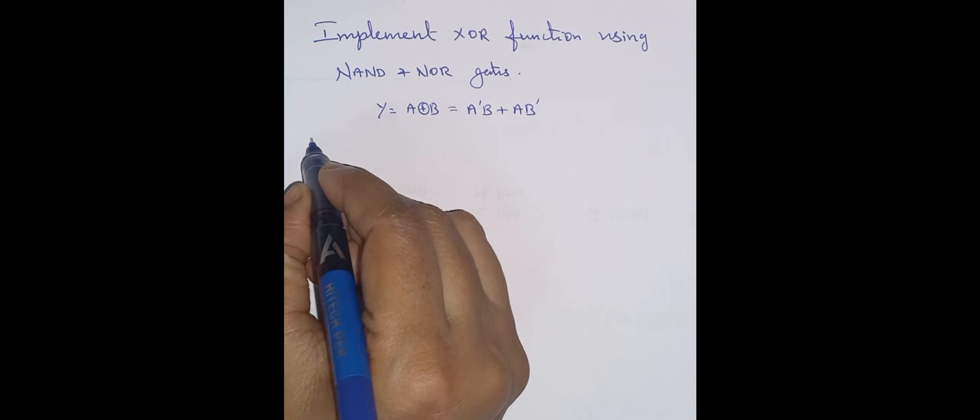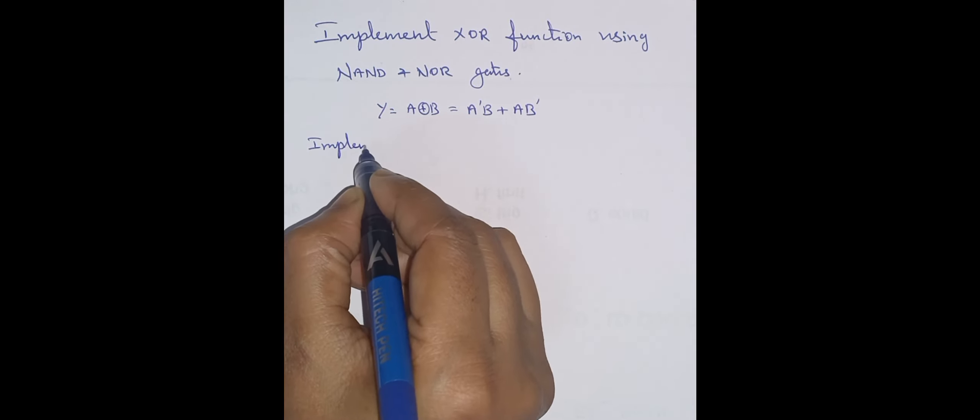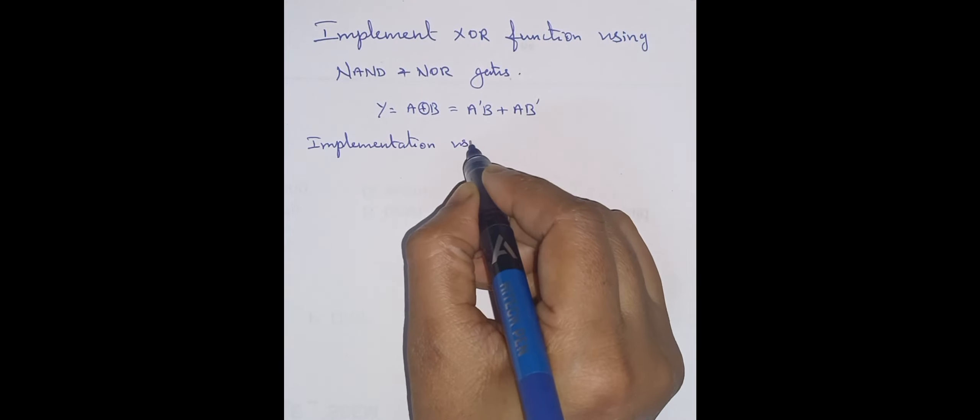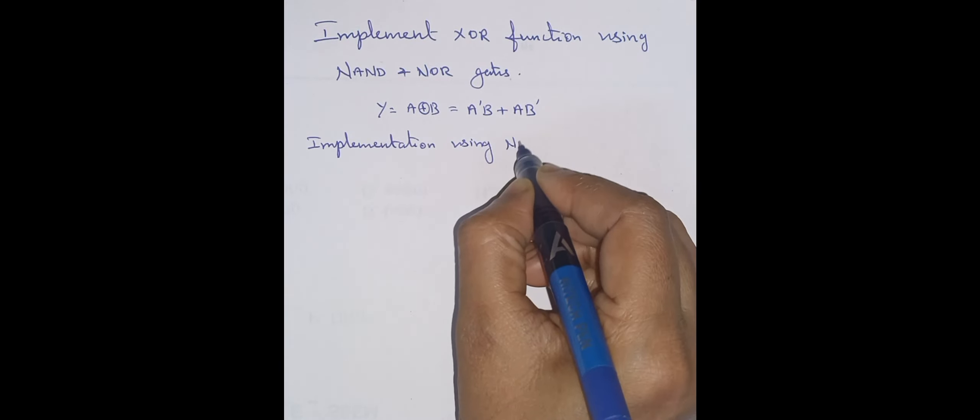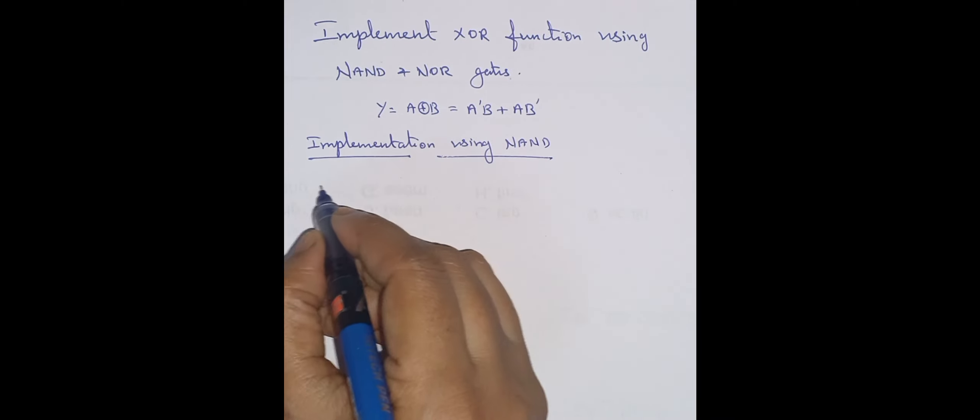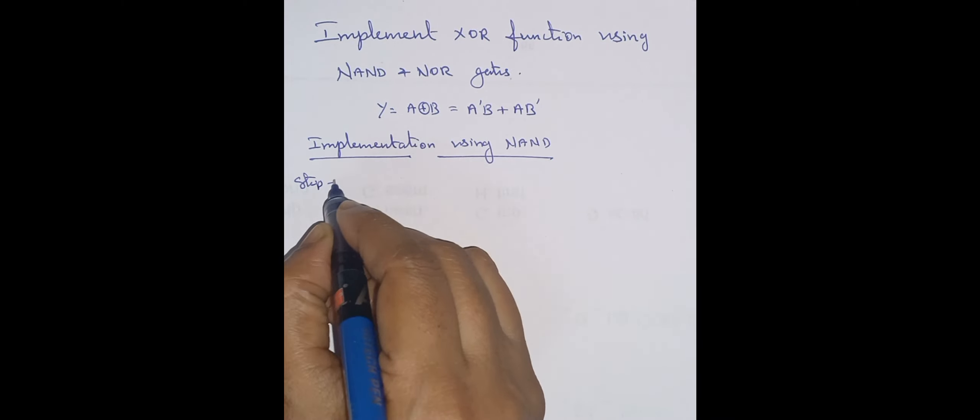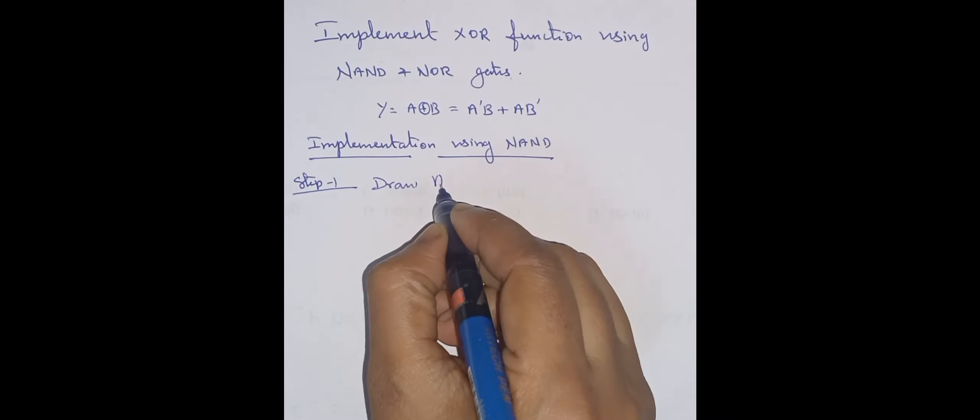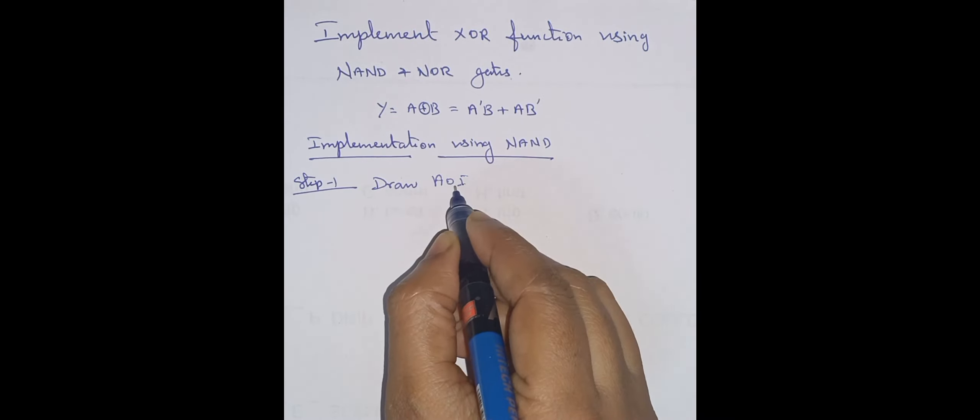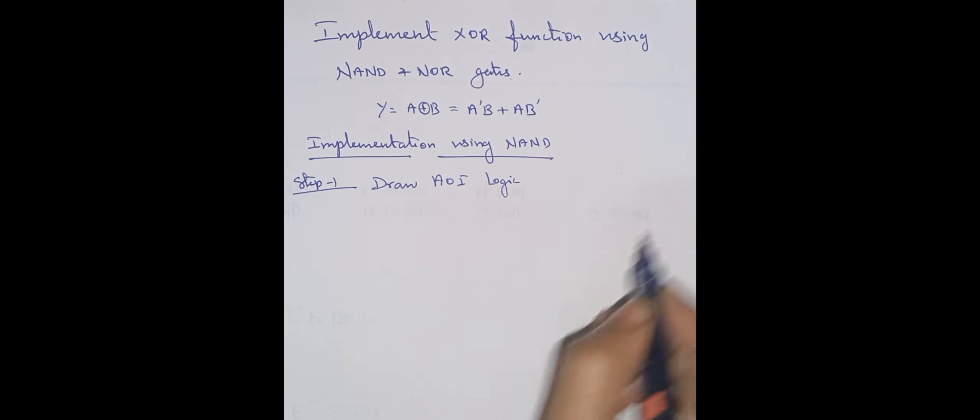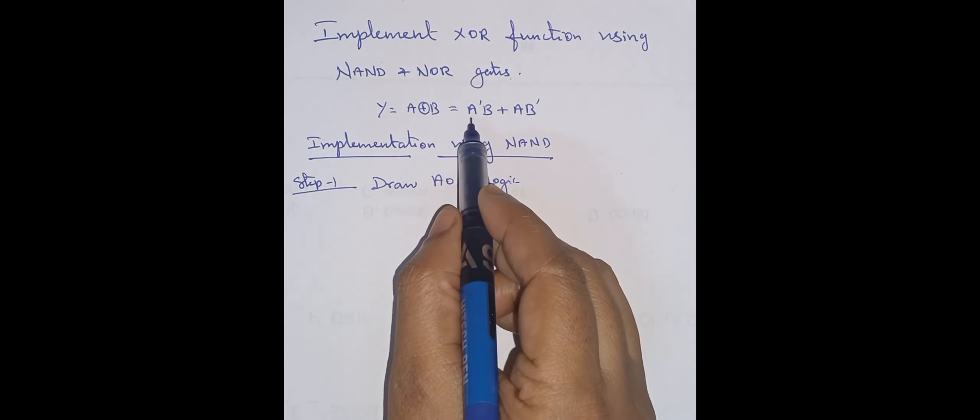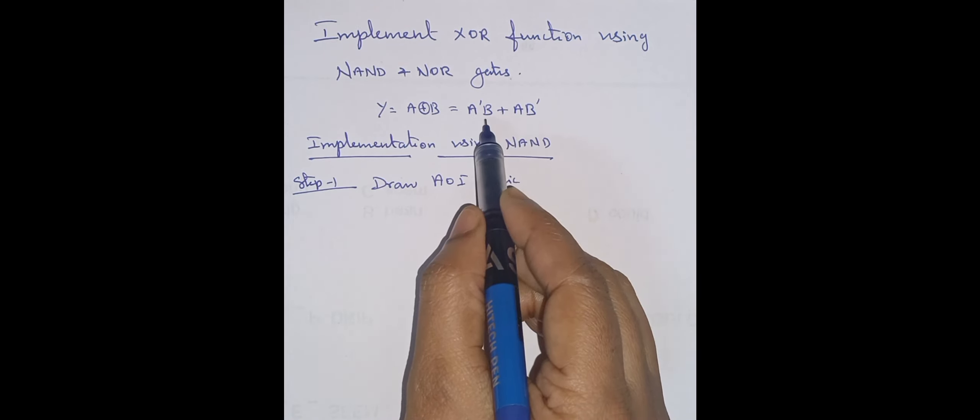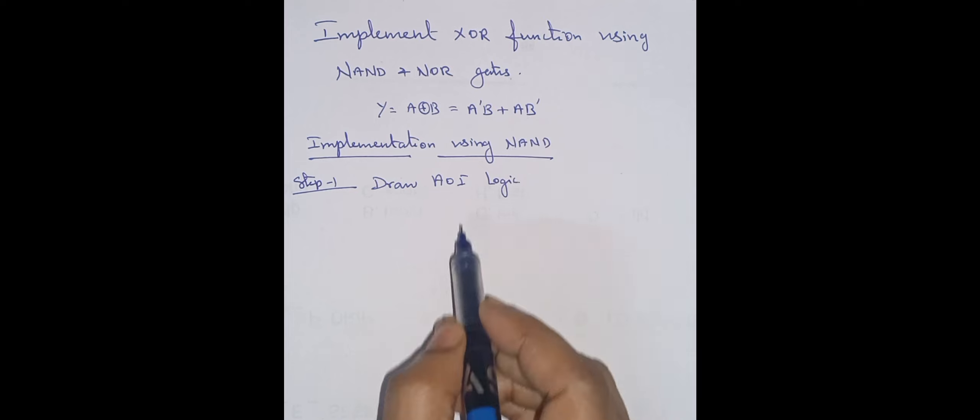First step, I am going to implement implementation using NAND first. Step 1 is how to draw AOI logic gate—AND-OR-Inverter logic. First, I have one term ANDed, another term ANDed, then these two terms are ORed together.